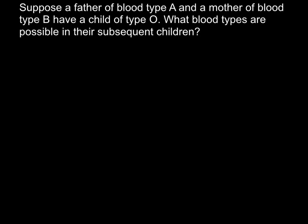Suppose a father of blood type A and a mother of blood type B have a child of type O. What blood types are possible in their subsequent children?